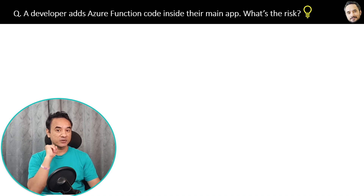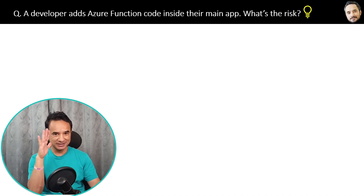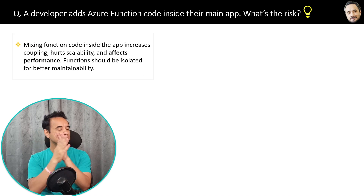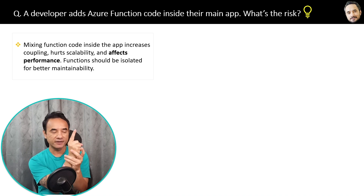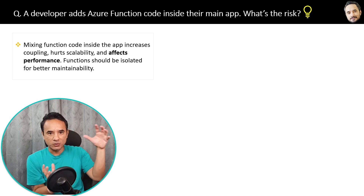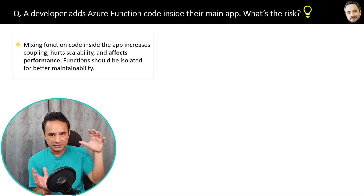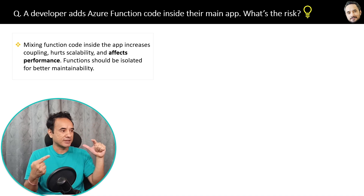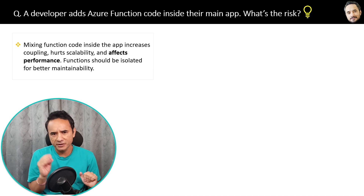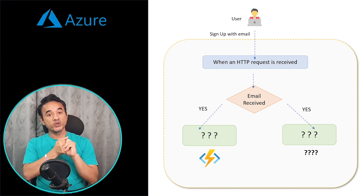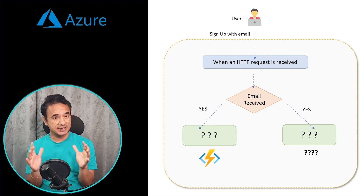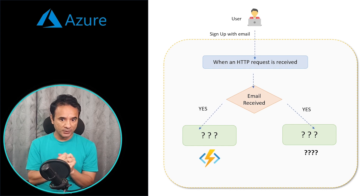Another question: a developer adds Azure Function code directly inside their main application — what is the problem and risk? The answer: mixing function code inside the app increases coupling, which hurts scalability and affects performance, because your main application code becomes bigger and larger, taking more time to execute. Functions should be isolated for better maintainability.